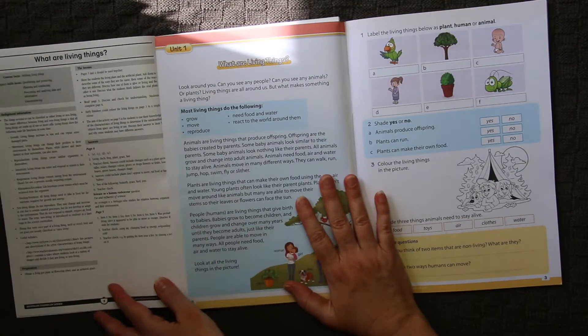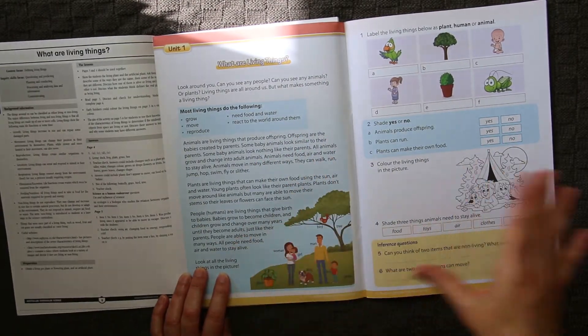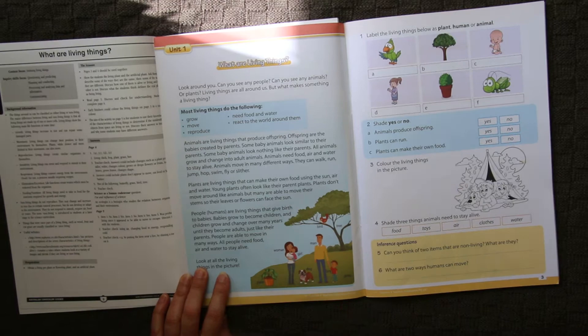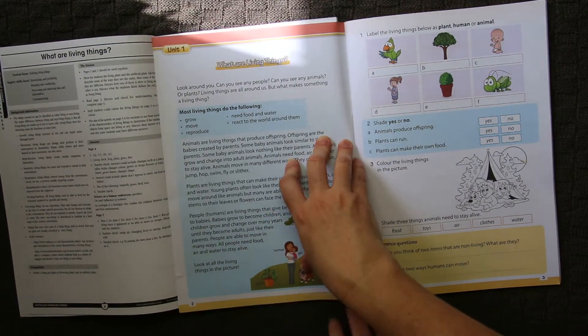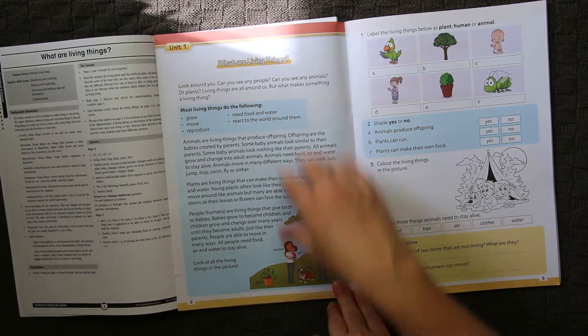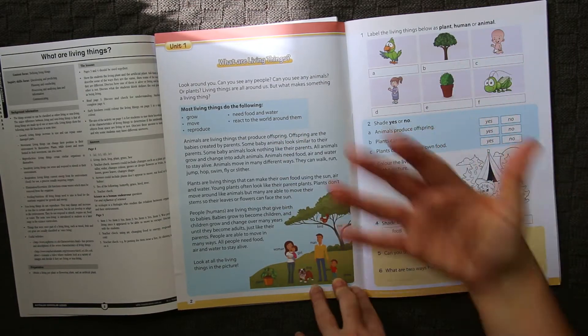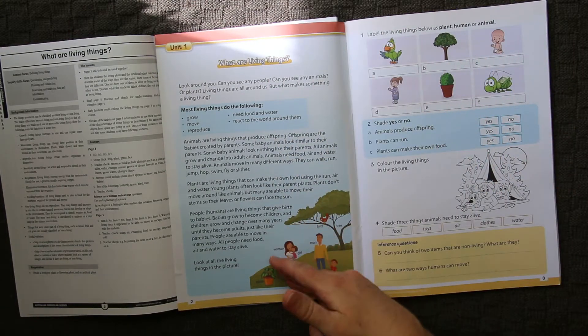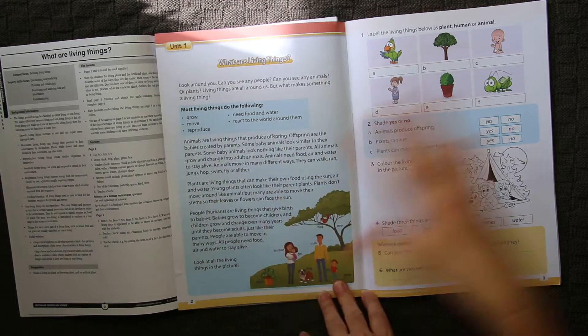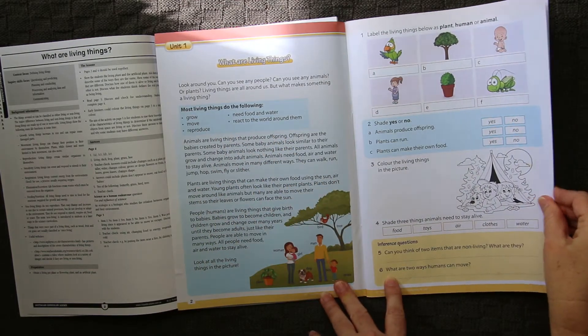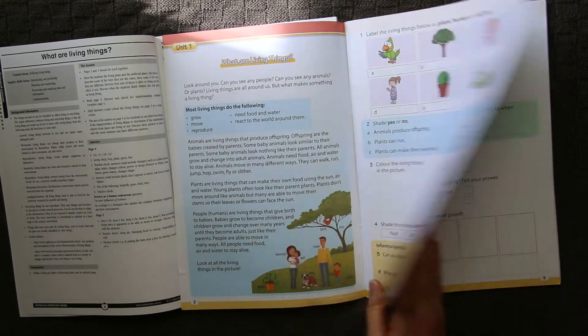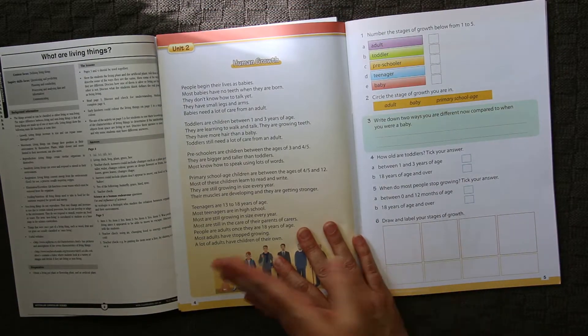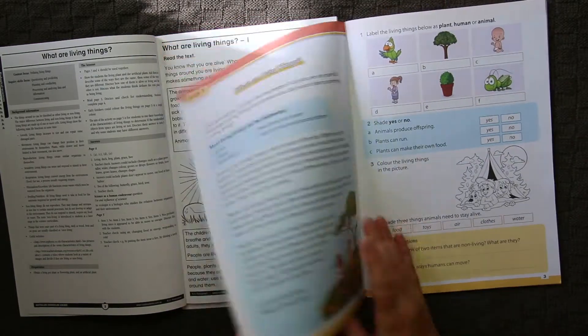Jumping over to the other one, it doesn't appear to be a teacher preparation page. This is something that you would sit and read with the student, or if you have a grade two child that's reading really well, they can read that themselves. Then you move across and do the worksheet-style activity. So it's just one page for unit one, what are living things, and then it moves straight into the second unit.